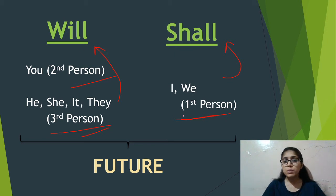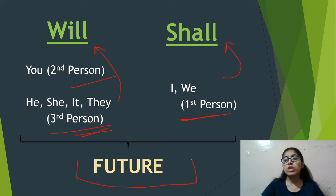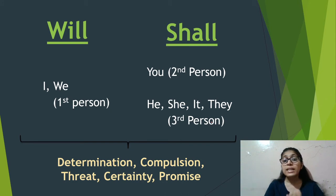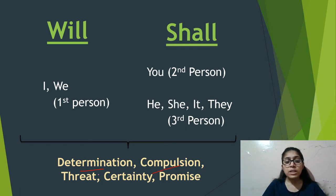When we use the standard rule — I and we with shall, and the rest with will — it simply shows the future, with no special emphasis. But when you reverse it, using will with I and we, and shall with second or third person, then it shows: determination, compulsion, threat, certainty — meaning surety — and promise.